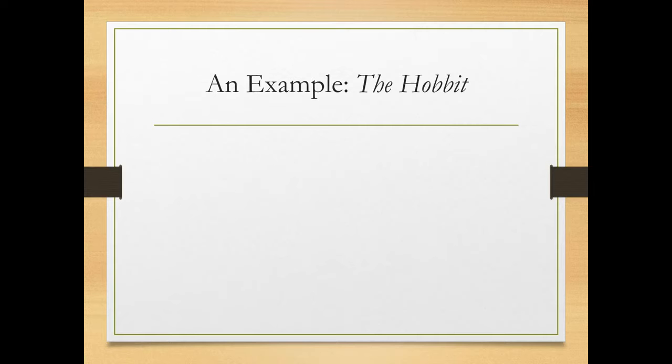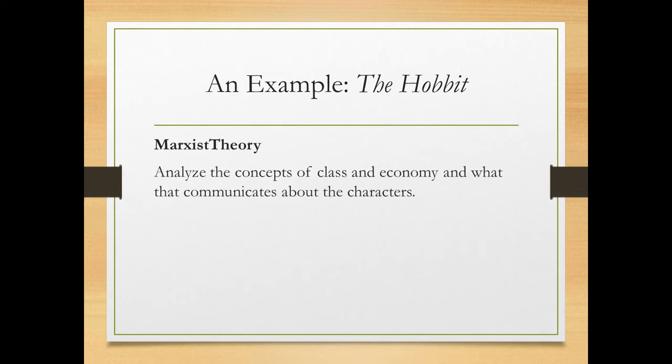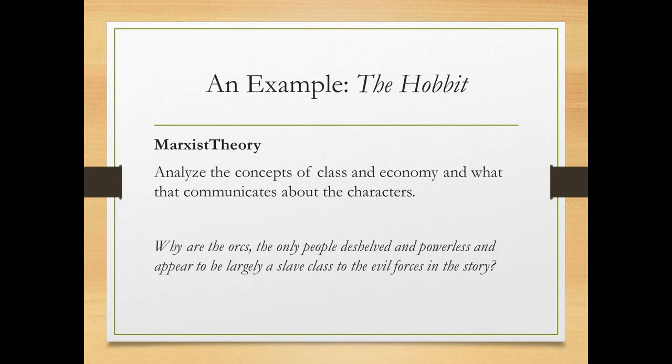Let's look at an example of theory in practice. We'll actually look at two examples, both around The Hobbit, so that we can understand why or how this might work as a tool. I'm predominantly talking about the films, since currently they are probably quite popular. People have seen them or been aware of them. If we looked at The Hobbit and we were to use Marxist theory—Marxist theory is a theory that analyzes the concepts of class and economy, and thinks about what that communicates about characters, about the culture.